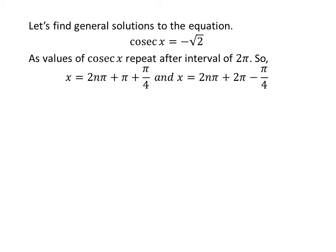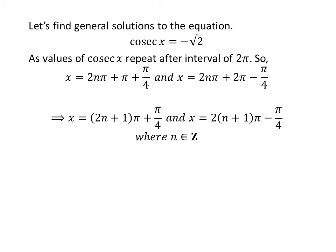Let us find the general solutions. Since the values of cosecant of x repeat after an interval of 2π, the general solutions are 2nπ + π + π/4 and 2nπ + 2π − π/4, where n is an integer. Further simplification gives the general solutions as (2n+1)π + π/4 and (2n+1)π − π/4.